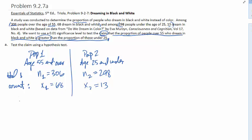Each of these would have their proportion for their sample, and we usually call this P-hat — that's our sample proportion. So for the first sample, it's going to be 68 over 306. And our proportion for our second sample is 13 over 298.